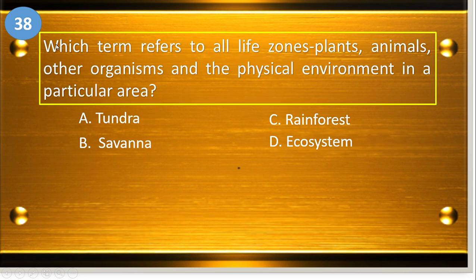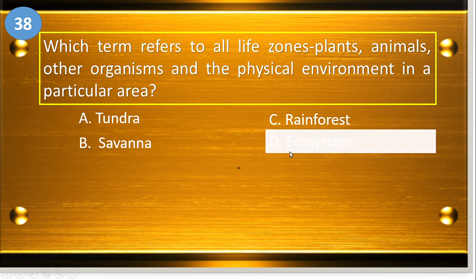Number thirty-eight: which term refers to all life zones, plants, animals, other organisms, and the physical environment in a particular area? A, tundra; B, savanna; C, rainforest; and D, ecosystem. The answer is ecosystem. Tundra, savanna, and rainforest are just examples of an ecosystem.